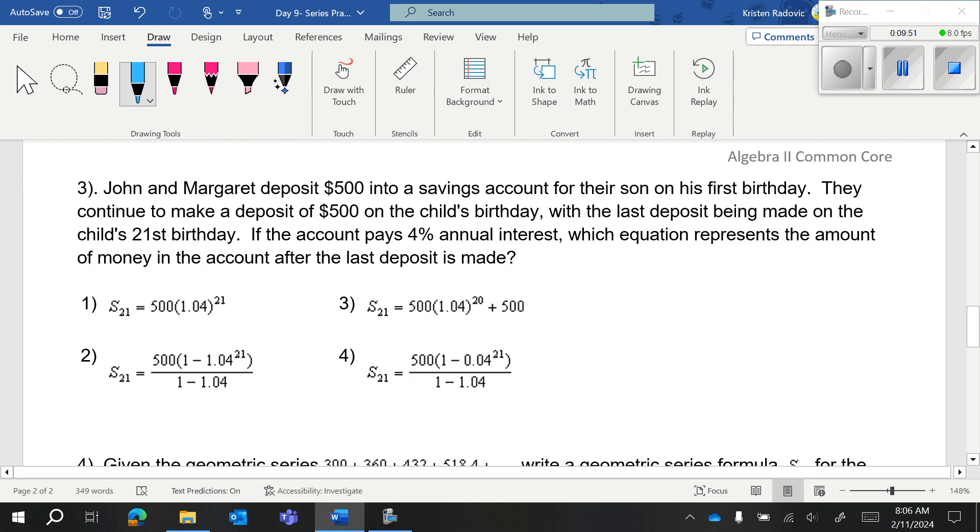We have John and Margaret deposit $500 into the savings account for their son on his first birthday. They continue to make a deposit of $500 on the child's birthday with the last deposit being made on the child's 21st birthday. If an account pays 4% annual interest, annual is yearly. So this is good because we're doing each year and the rate is yearly. Which equation represents the amount of money in the account after the last deposit is made.